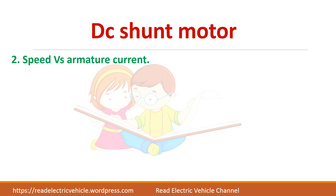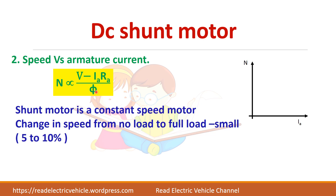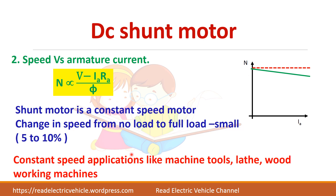Next, the speed versus armature current characteristic. Speed is directly proportional to back EMF divided by flux. Since flux is almost constant in a shunt motor, as the load increases there is only a small drop in speed from no-load speed. It acts almost as a constant speed motor and is preferred for constant speed applications like machine tools, lathes, and woodworking machines.